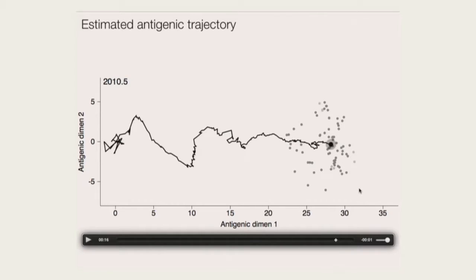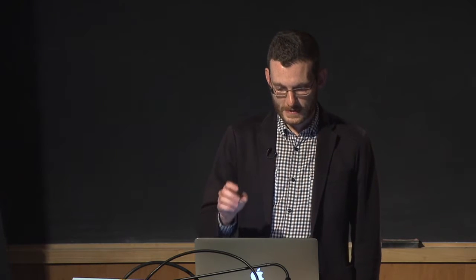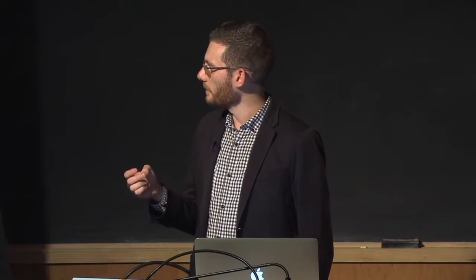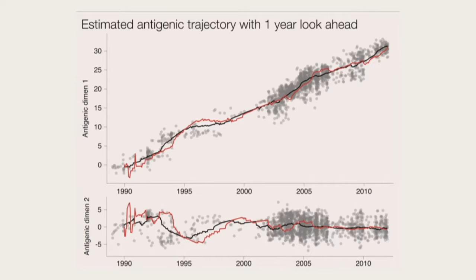It's now very simple with this model in place to put a one-year look-ahead: projecting forward using the estimated velocity vector, we can predict where flu will be in a year's time. The red dot is projecting forward where we think the virus population will be relative to the current date. The degree to which the black line and the red line overlap tells you how good a fit we're doing. Looking at 2005 specifically — the gray dots are viruses coming up, the black line is the inferred location in 2005, and the red line is where we'd infer it to be a year back in 2004. Things are looking pretty good in the last few years.